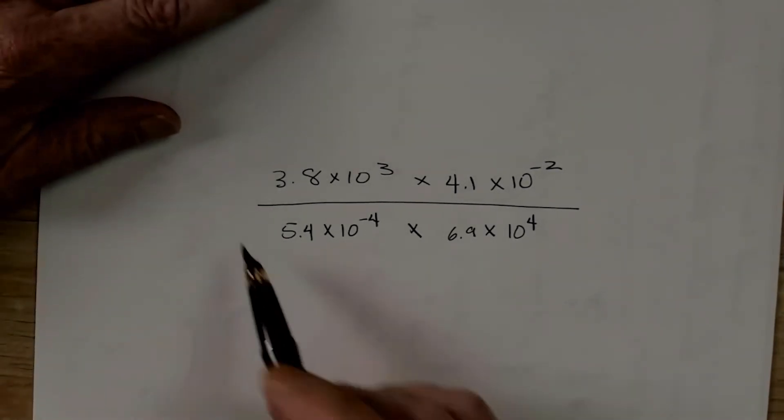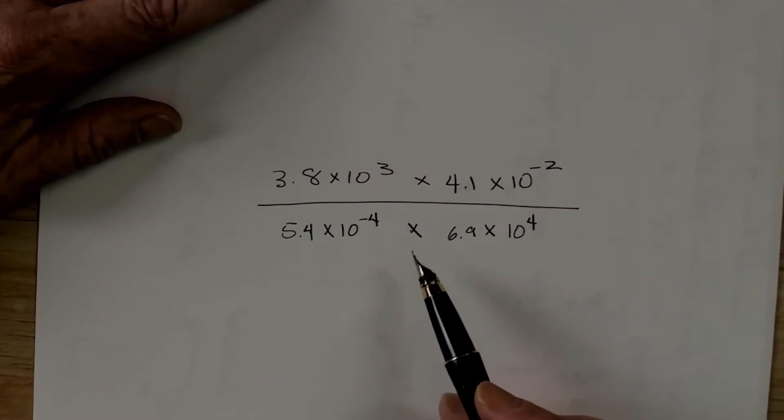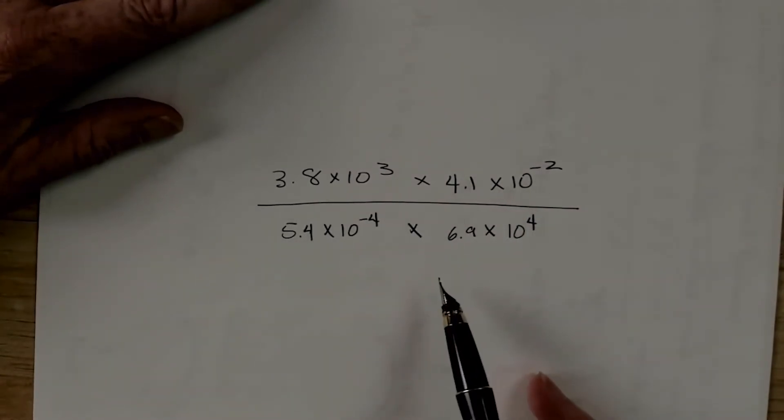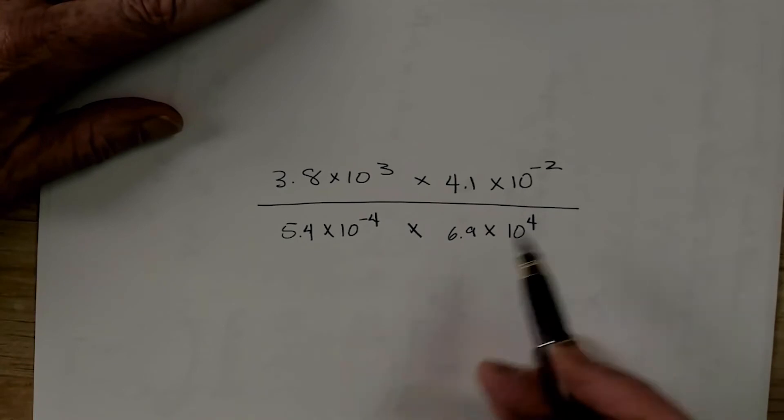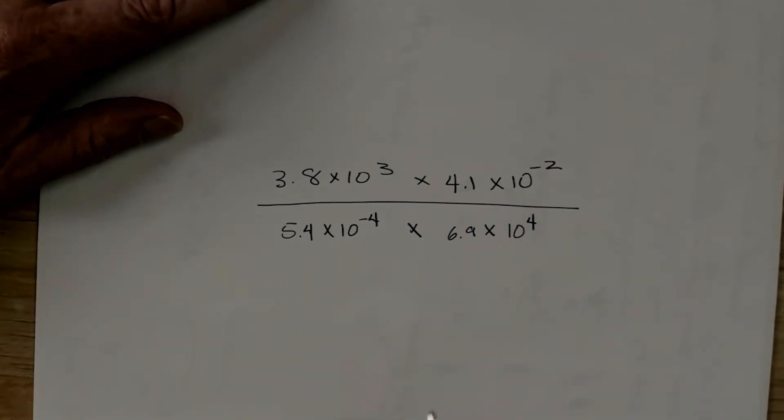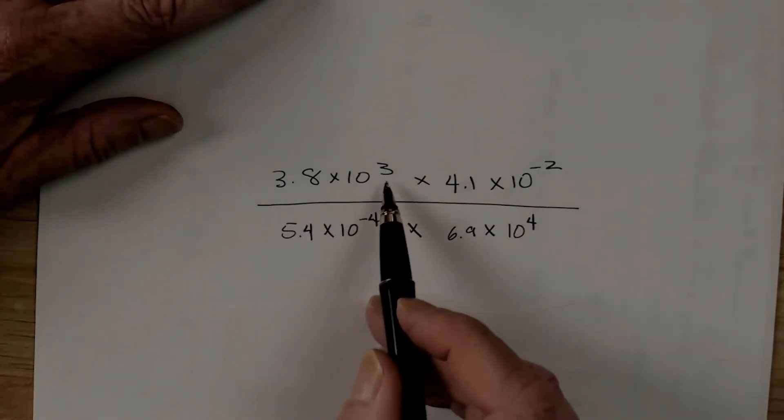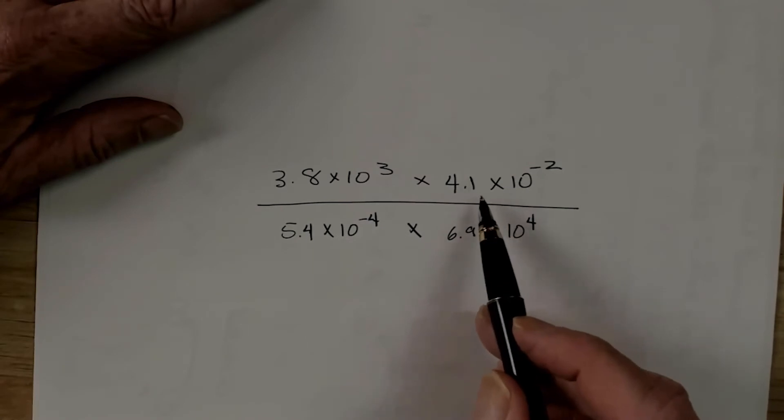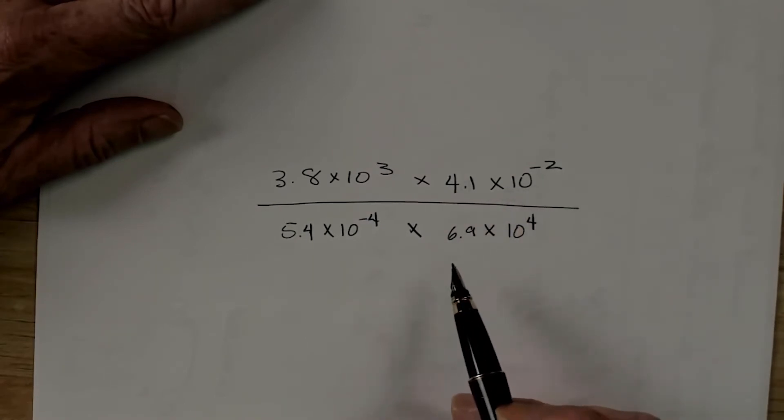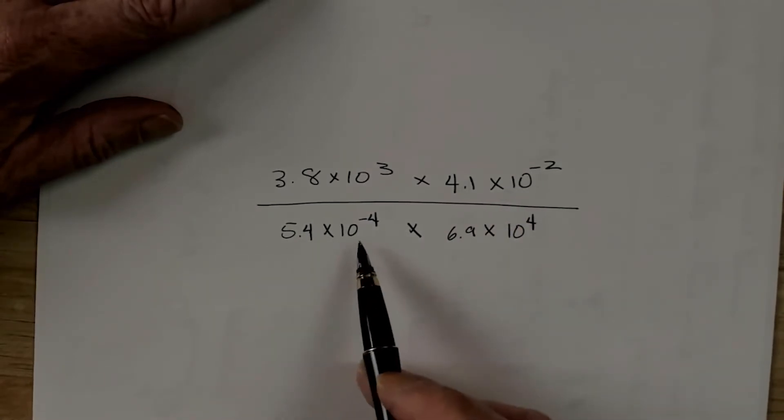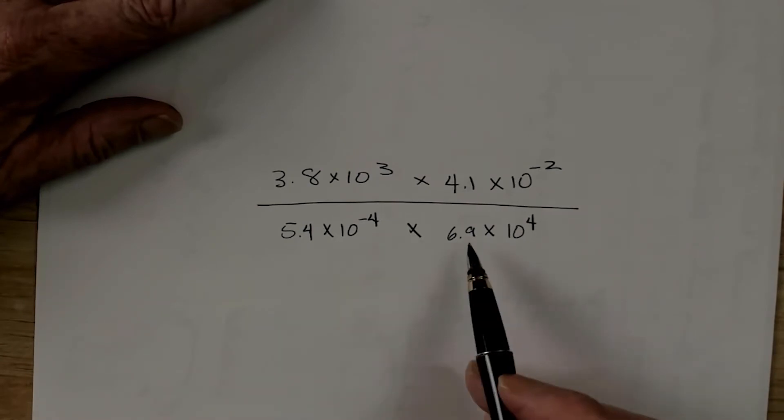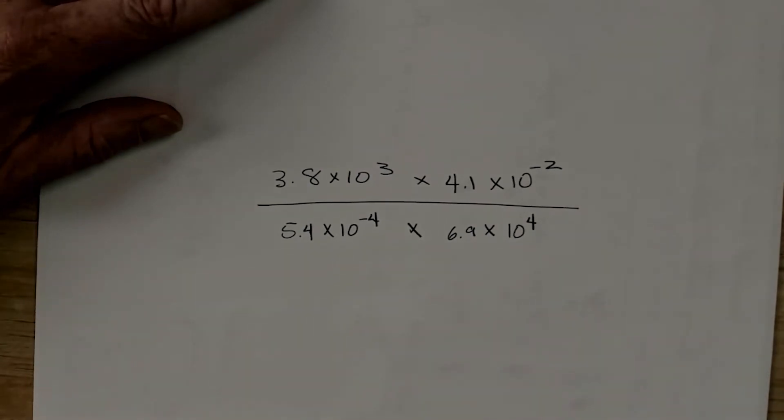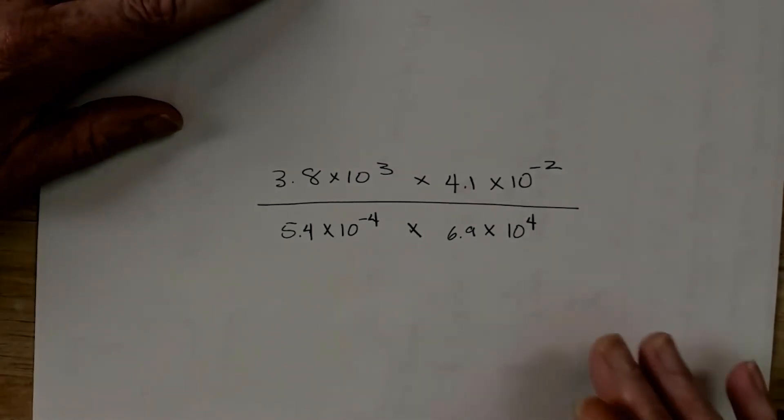So, here's a rather complex-looking equation. Now, most of us can't do this in our head. And if we did it on a calculator, we'd get the right answer. But we're going to use the slide rule today. So, let's go ahead and go through a quick technique that we have. Now, this is 3.8 times 10 to the third times 4.1 times 10 to the negative 2 over 5.4 times 10 to the negative 4 times 6.9 times 10 to the 4. Let's go see if we can kind of get a good estimate of this.